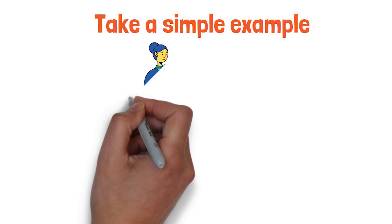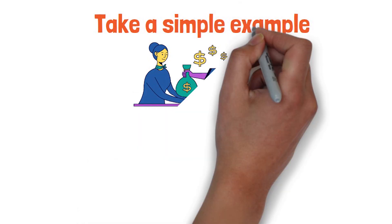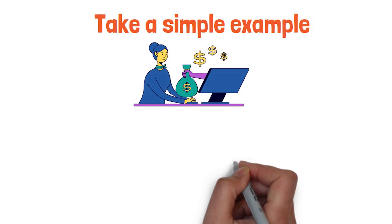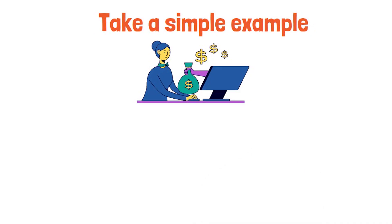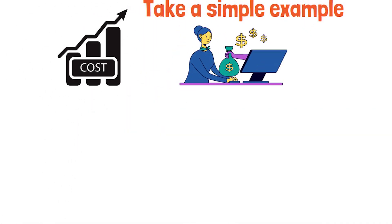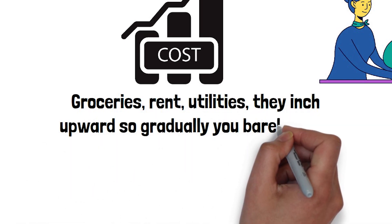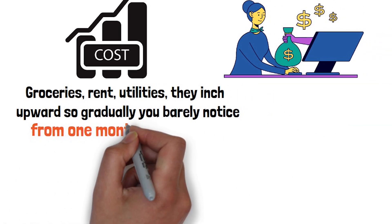Take a simple example. You set up an automatic transfer of $200 a month into a savings account and watch your balance grow steadily over the years. At the same time, everyday costs quietly rise. Groceries, rent, utilities, they inch upward so gradually you barely notice from one month to the next.